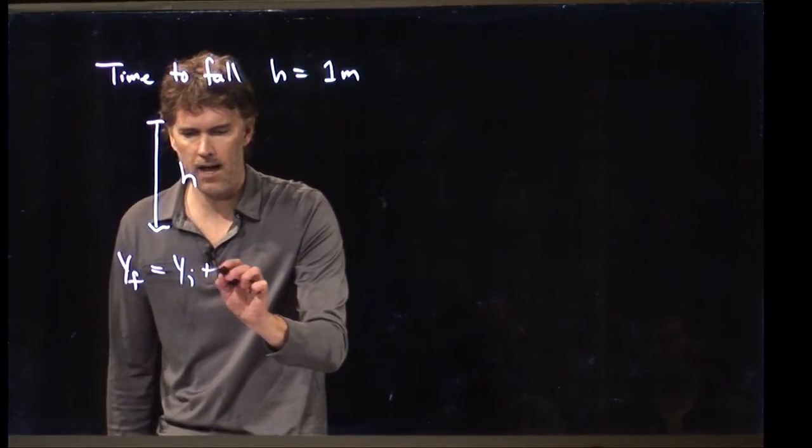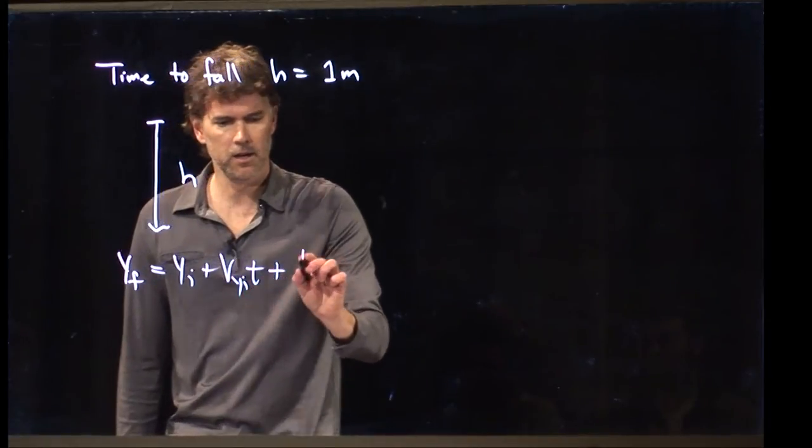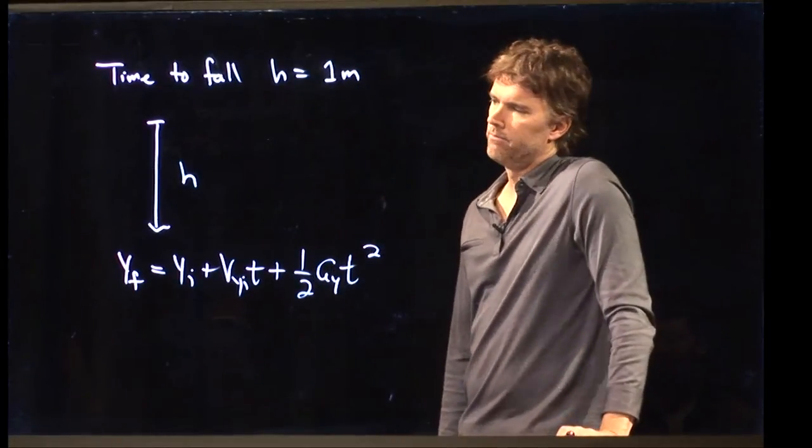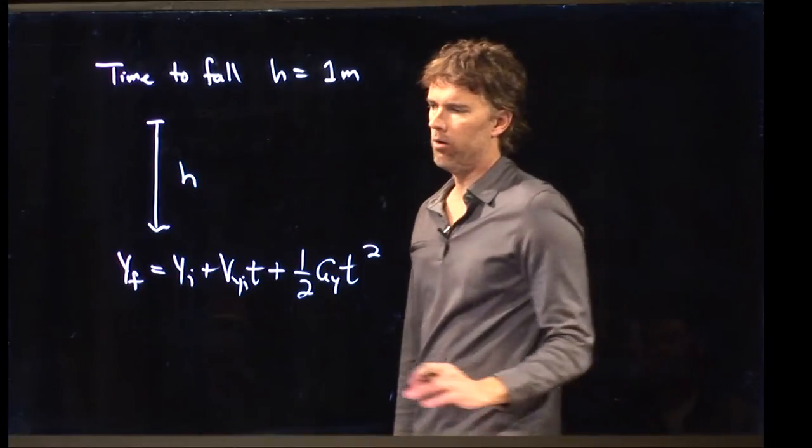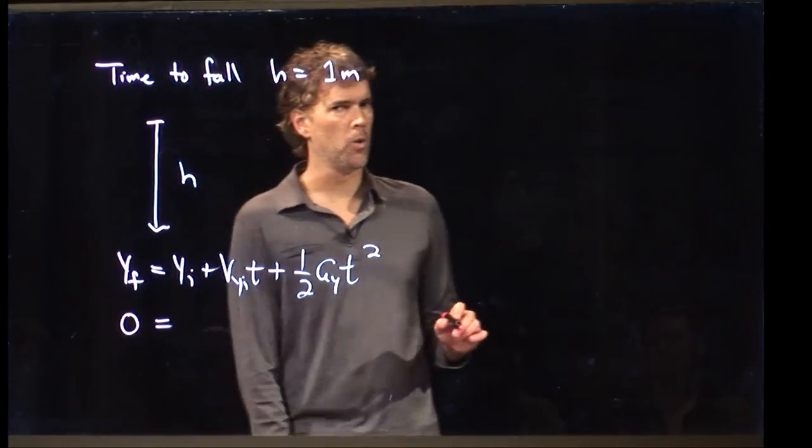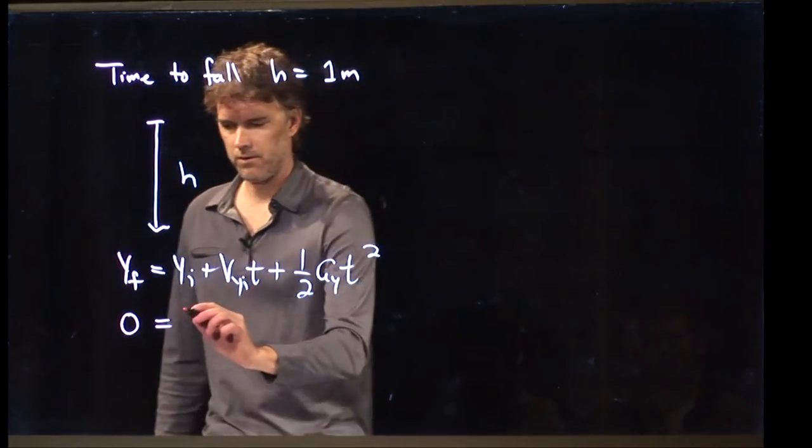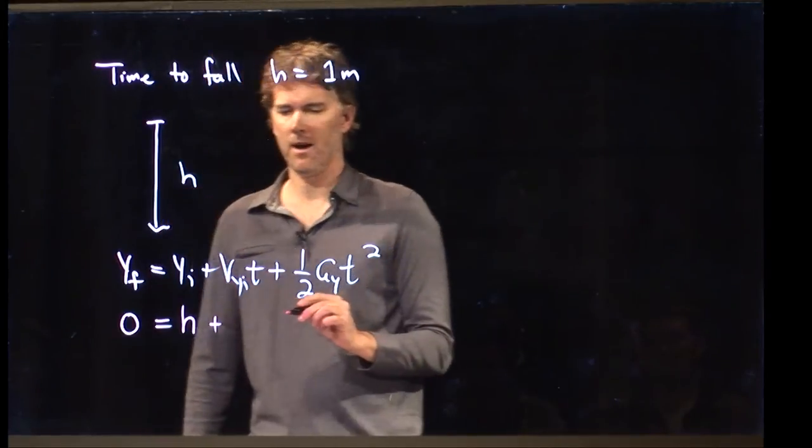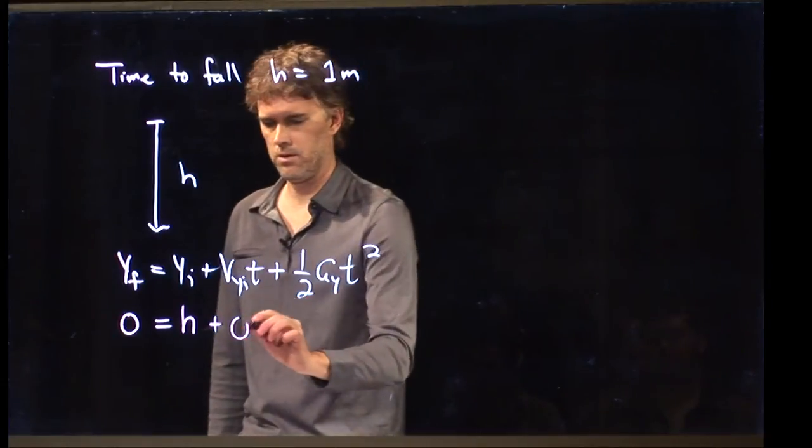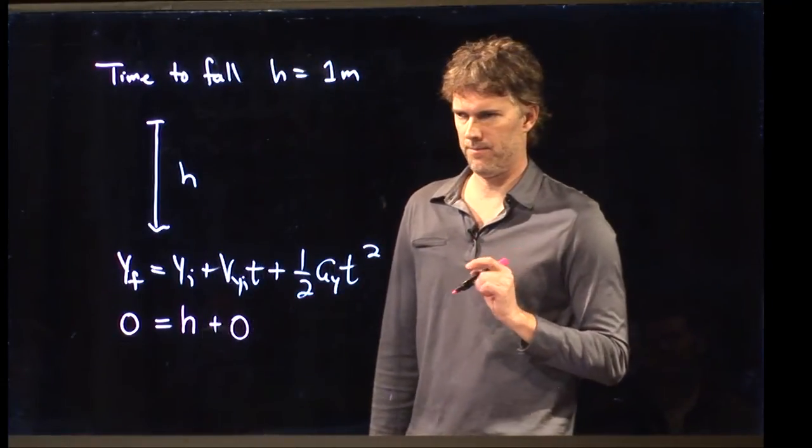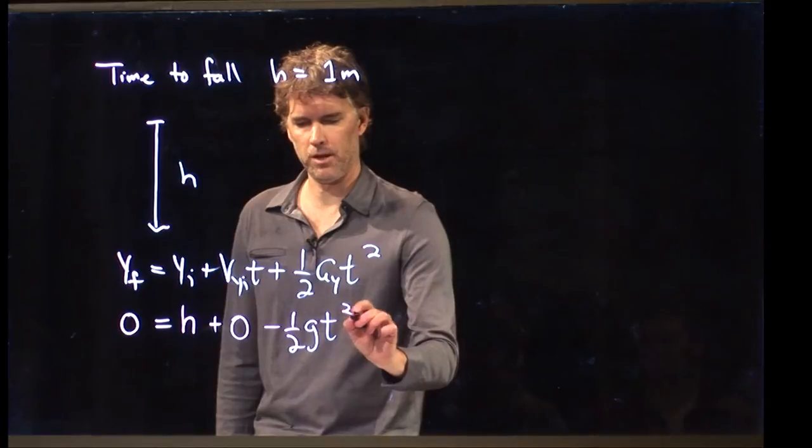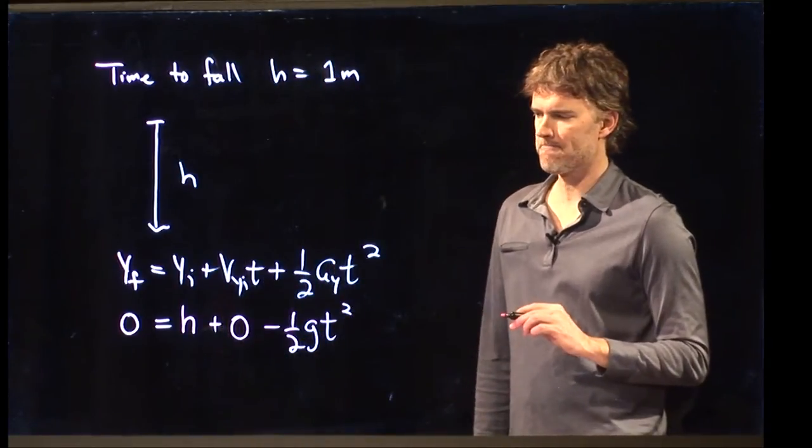One of those looks like this: yf equals yi plus vyi times t plus one half a sub y t squared. That looks like a pretty good equation to use. Do we know y final? Yes. That is zero. Do we know y initial? Yes. That is the height h. What about vy initial? What's vy initial? Zero. Zero. What is a y? G. Negative g. Negative g. So we put a minus sign out in front. And we're going to label this one half gt squared right there.